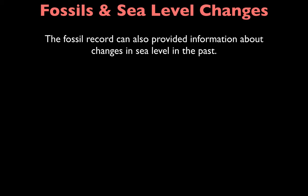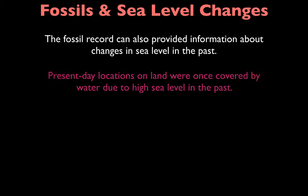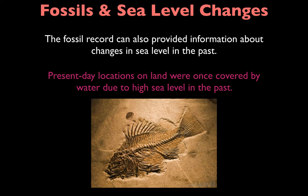Fossils can also provide information about changes in sea level in the past. Some places on Earth that are just land now show evidence they were once covered by water. We know this because some of these land areas contain fish fossils, meaning there must have been a time when that land was covered with water at a high sea level. When sea level dropped, the land still contained the evidence of those fish fossils.